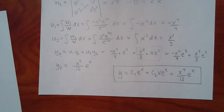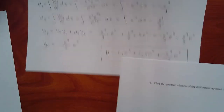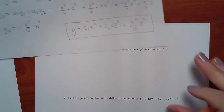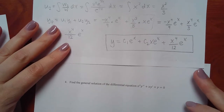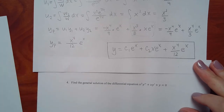Moving on: the next problem has a small space provided, which hints it's a shorter problem. Is it constant coefficients or Cauchy-Euler? It's homogeneous — you can see the zero — so it won't be one of the long non-homogeneous ones. Now, which set of formulas do we use for the auxiliary equation? Is it constant coefficients or Cauchy-Euler?